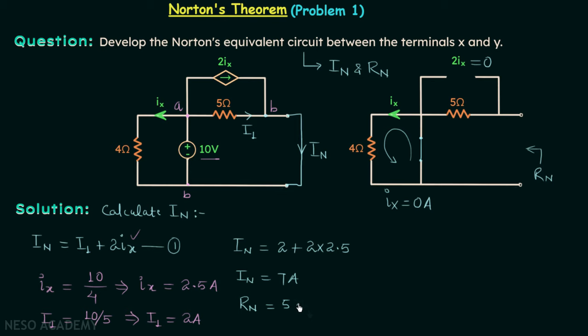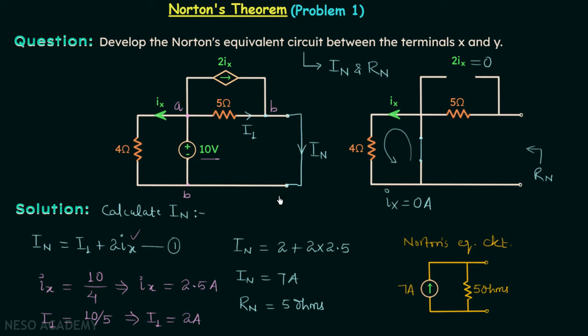We now have everything needed for the Norton's equivalent circuit: a current source of 7 amperes in parallel with a resistance of 5 ohms. This is the Norton's equivalent circuit for this network.